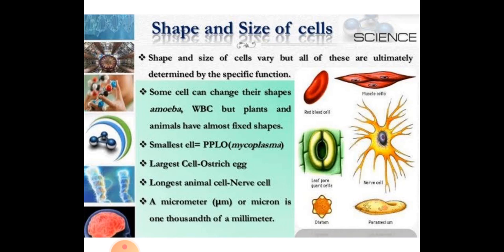The largest cell is the ostrich egg — it is called the largest cell. There is a difference between largest and longest: largest refers to area, while longest refers to length. The longest animal cell is the nerve cell. RBCs in human beings are about 7 micrometers in diameter.